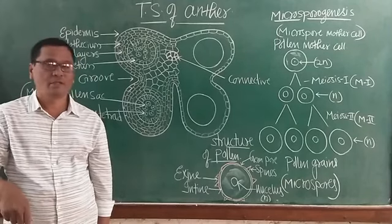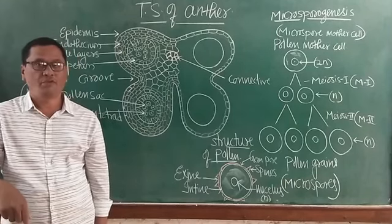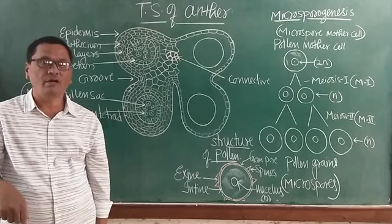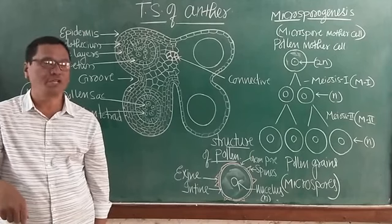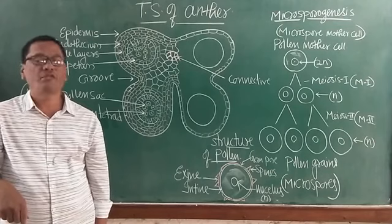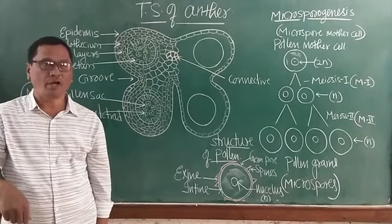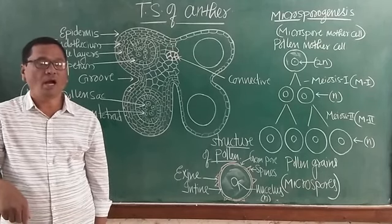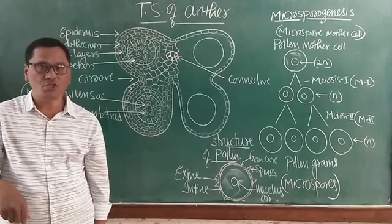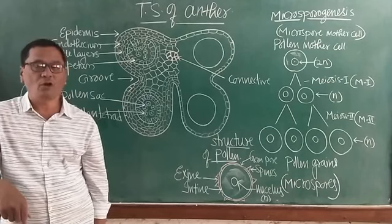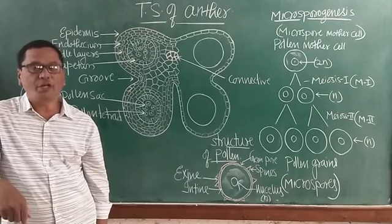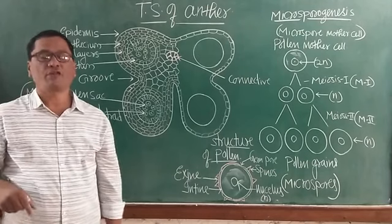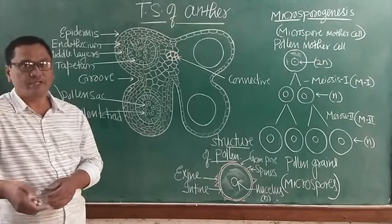Yesterday we studied the basics of asexual reproduction and sexual reproduction. Today we shall continue with sexual reproduction in flowers. A flower is a highly modified and condensed shoot specially designed for sexual reproduction. This is the structure for sexual reproduction in angiosperms, the flowering plants.